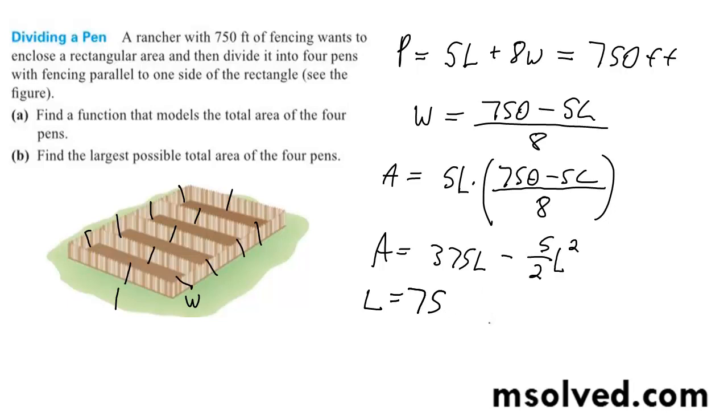For the largest possible area, if we have 75 for L, we can plug this back into our perimeter equation. So we get 750 equals 5 times 75 plus 8W. We get 375 equals 8W, and then finally W equals 46.875.